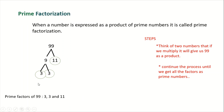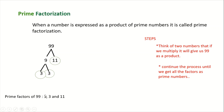If we multiply 3 times 3 that is 9, and 9 times 11 is 99. These are the prime factors of 99 — meaning these factors have no other factors besides 1 and themselves: 3 has only 1 and 3, and 11 has only 1 and 11.